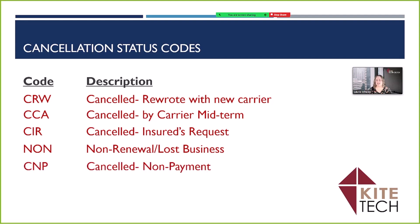Then we have CNP for canceled non-payment. We also suggest an OTP, which is a one-time policy, bond, or project — your special event projects, railroad protective, OCP, or maybe a project-specific builder's risk. You'll want to assign the new business status code to those policies when first written, and then at the end of the project term, once you've decided the project or special event has occurred and the policy is no longer needed, you can assign an OTP policy status. This will act just like your canceled rewrote status and exclude from lost business reports.